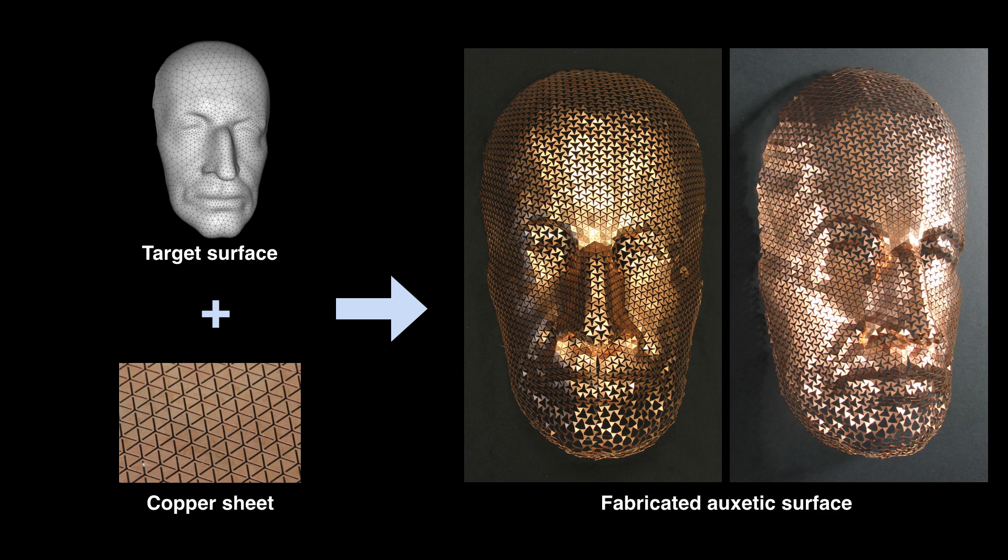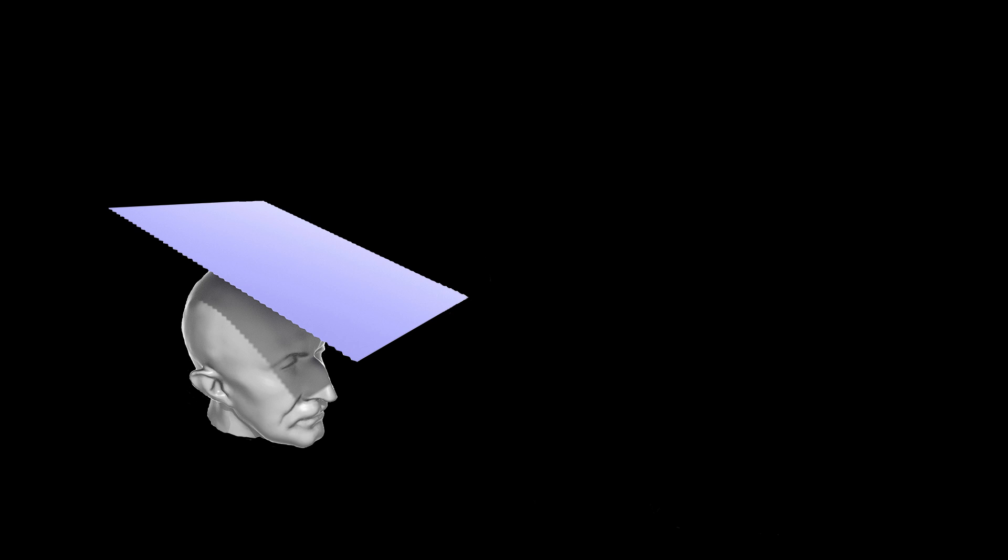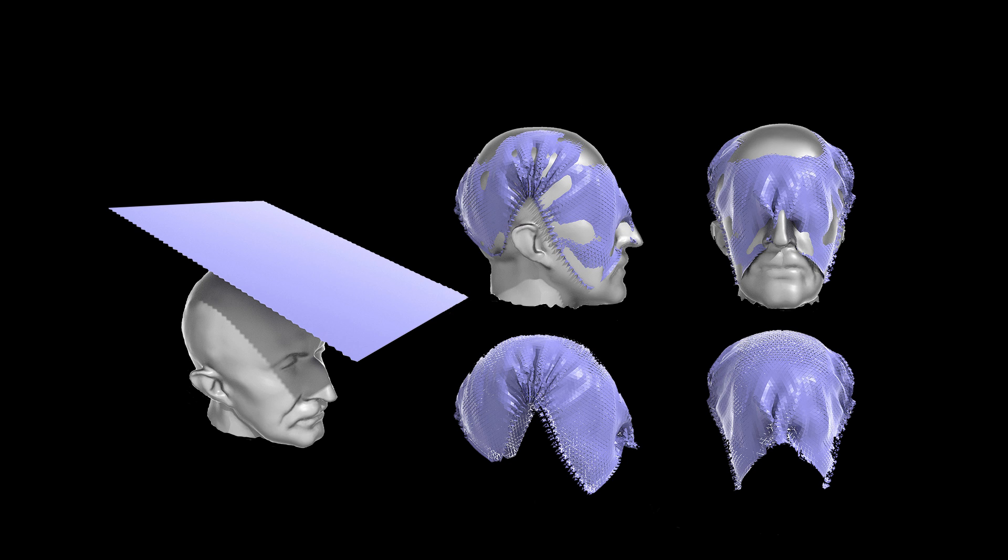So let's see how these materials behave. If we simply try to wrap a flat piece of auxetic material around the complex target surface, in most cases our attempt will fail.